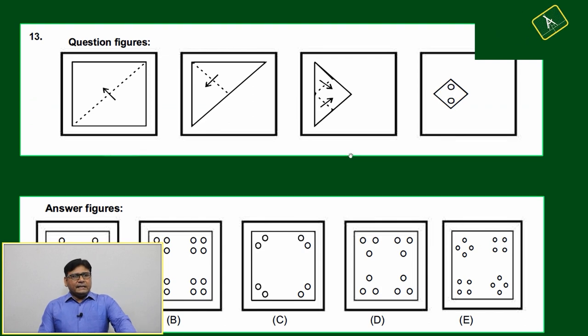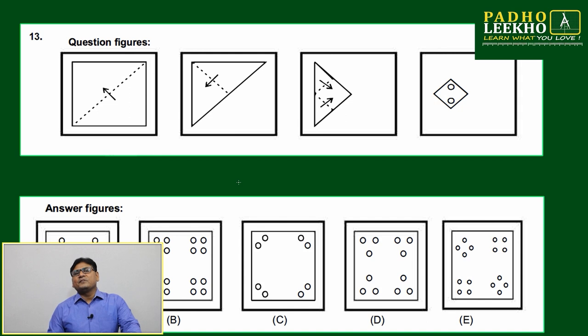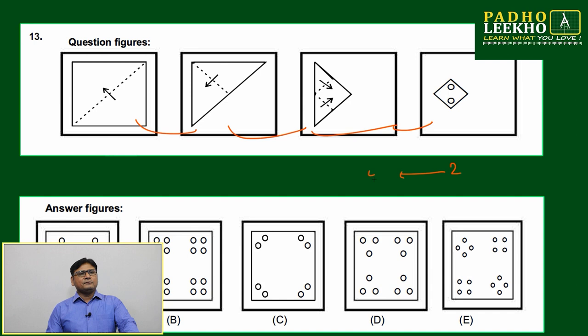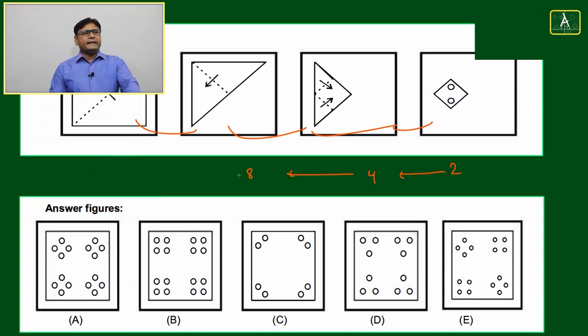Now we'll come to question number 13, that is also based on paper folding with further complication. How many foldings are there? 1, 2, 3, 4 here. How many holes? 2. Reverse way 4, reverse way 8.